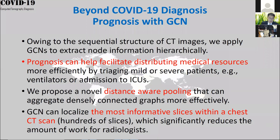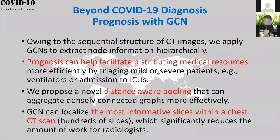Moving to the second work, we want to do more than just diagnosis. Instead of just positive or negative, we want to show prognosis using a graph convolutional network, or GCN. A CT scan contains hundreds of image slices with a sequential structure — like a movie. All these slices are highly correlated, so we can use the GCN to facilitate prognosis information.